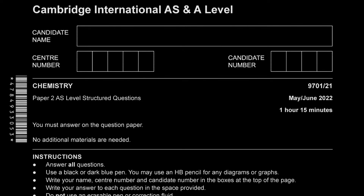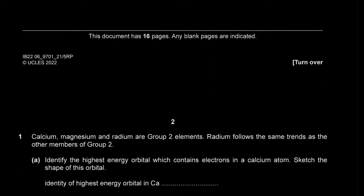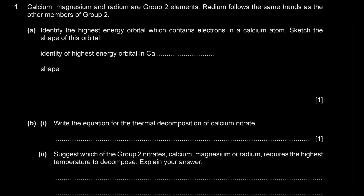Today we're solving May June 2022 Paper 21. Question 1 says calcium, magnesium, and radium are Group 2 elements, and radium follows the same trends as the other members of Group 2.